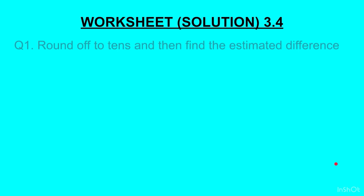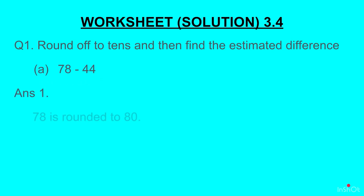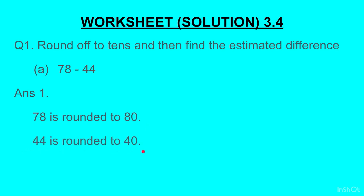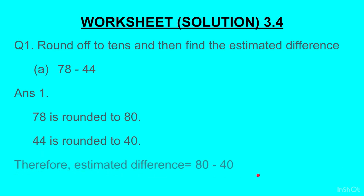Question 1, Part A: 78 minus 44. 78 is rounded to 80. 44 is rounded to 40 because in the ones place we had 4; 4 is less than 5, so it rounds off to the lower limit, which is 40. Therefore the estimated difference is 80 minus 40, which gives us 40.